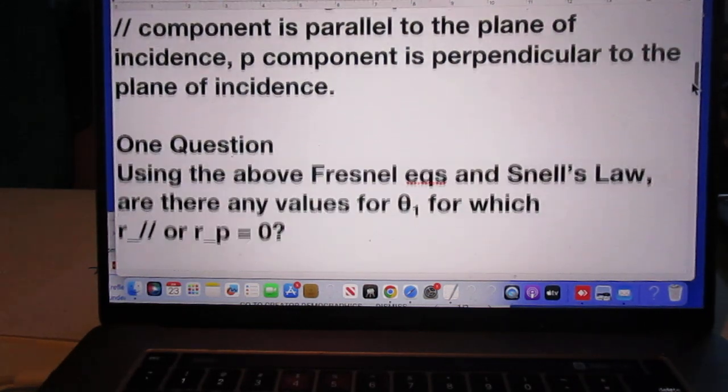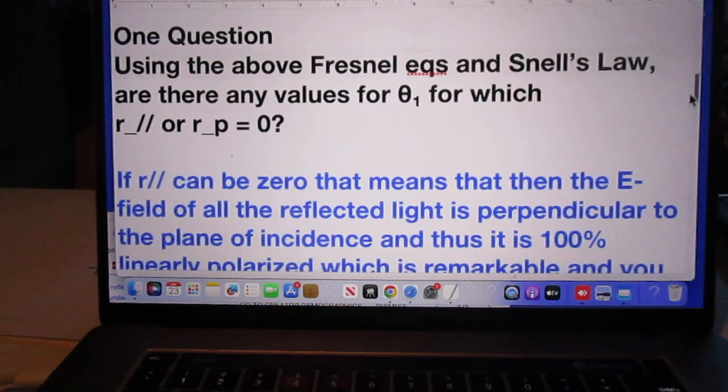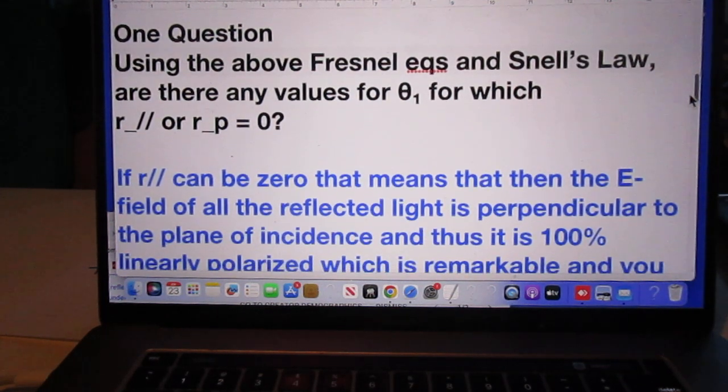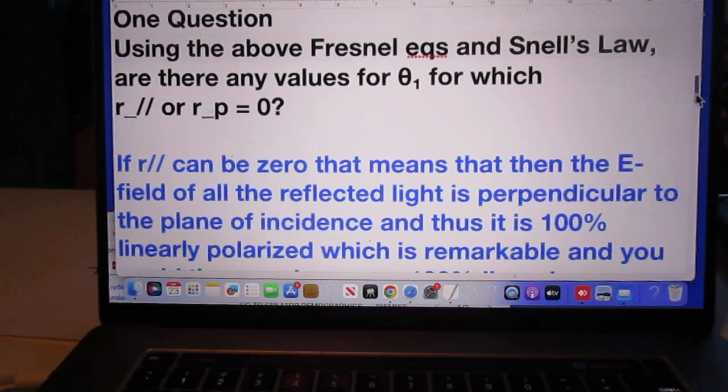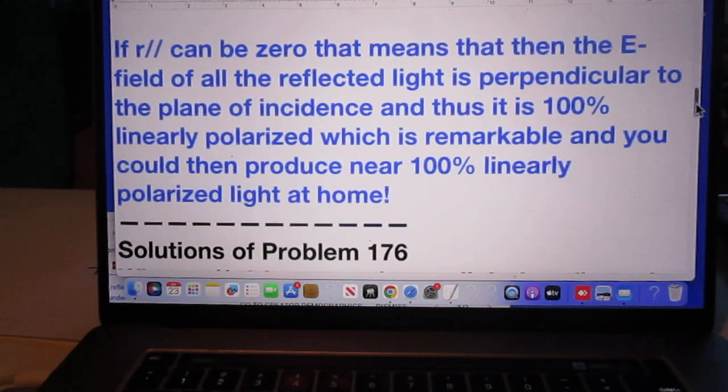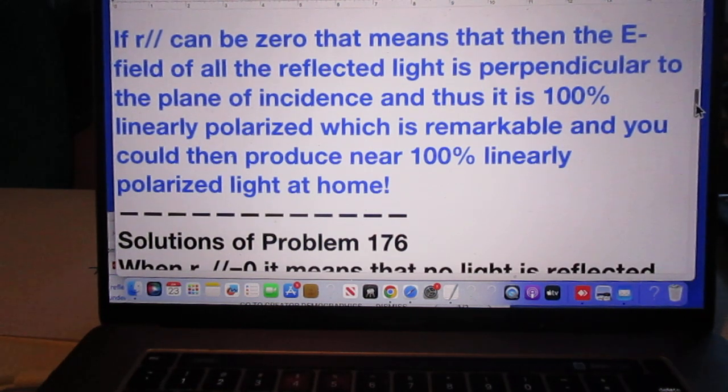Now there is one question. Is it possible somehow that there is an angle theta 1 such that there is no parallel reflection? Read the blue. If R parallel can be zero, that means that then the E field of all the reflected light is perpendicular to the plane of incidence. Thus it is 100% linearly polarized, because all that radiation is perpendicular to the same direction. And if you can find such an angle, that light is 100% linearly polarized.